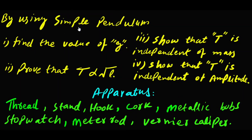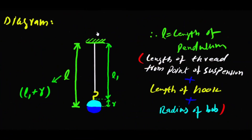Simple pendulum کو استعمال کرتے ہوئے ہم نے یہ چار part practical کے perform کرنے ہیں۔ Apparatus میں ہمیں thread چاہیے، stand، hook، metallic bobs، strap watch، meter rod، اور vernier caliper چاہیے۔